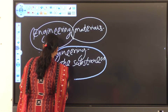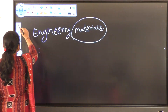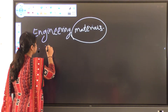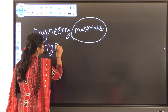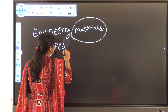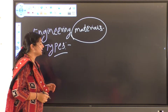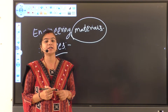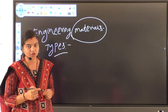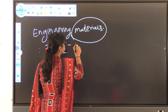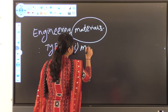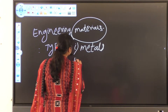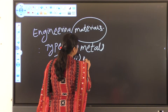Now we discuss the types of Engineering Materials. We know that basically Engineering Materials are classified into two types. First is Metals and second one is Non-Metals.